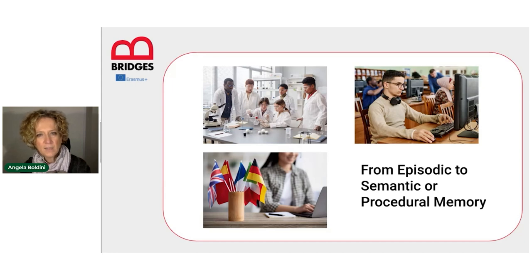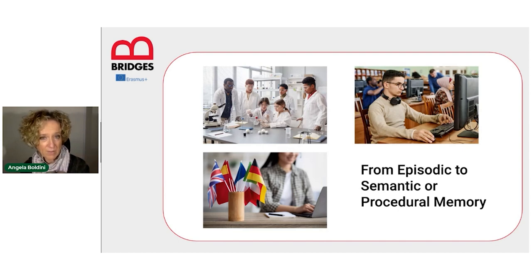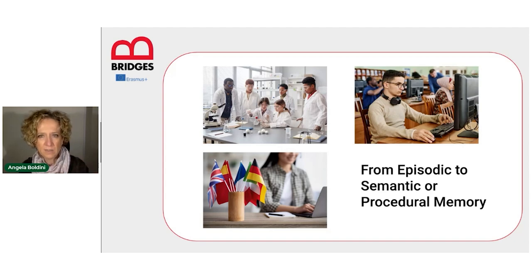With other types of learning, there's a switch from explicit to procedural memory. We saw the driving example earlier, and the same applies to all the automatic movements that we learn — from using a computer to playing a musical instrument or operating with whatever technical instrument in a scientific lab.